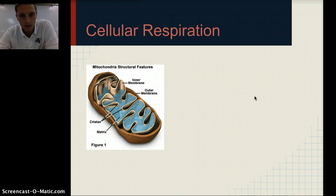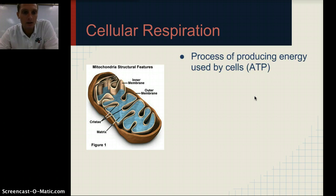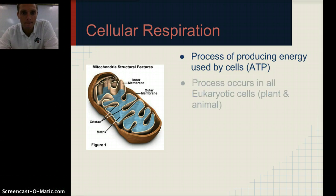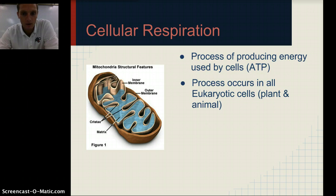Let's take a look at cellular respiration. This happens in both plants and animals, and it particularly happens in the mitochondria of these cells. Cellular respiration is the process of producing the energy that cells need, and that is ATP — adenosine triphosphate. It occurs in all eukaryotic cells — both plant and animal cells — not just animal cells.